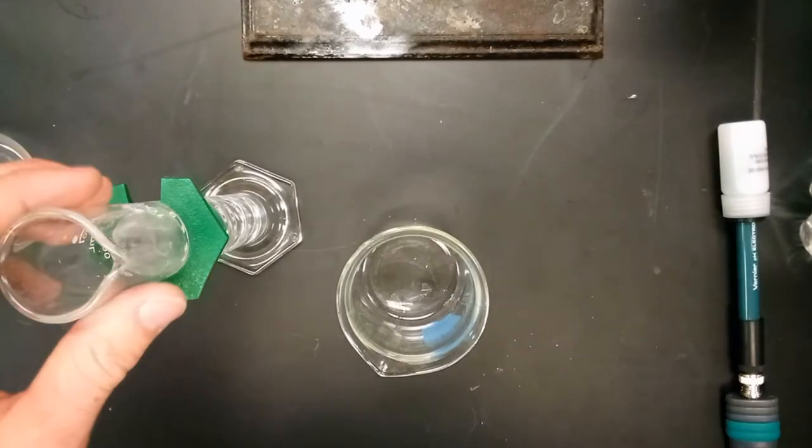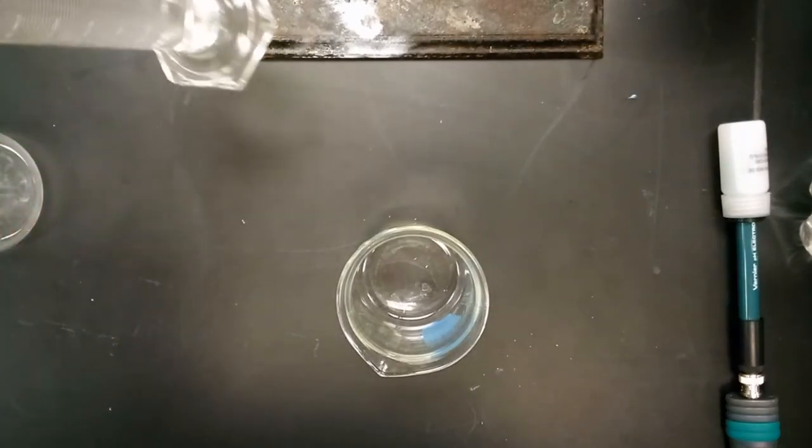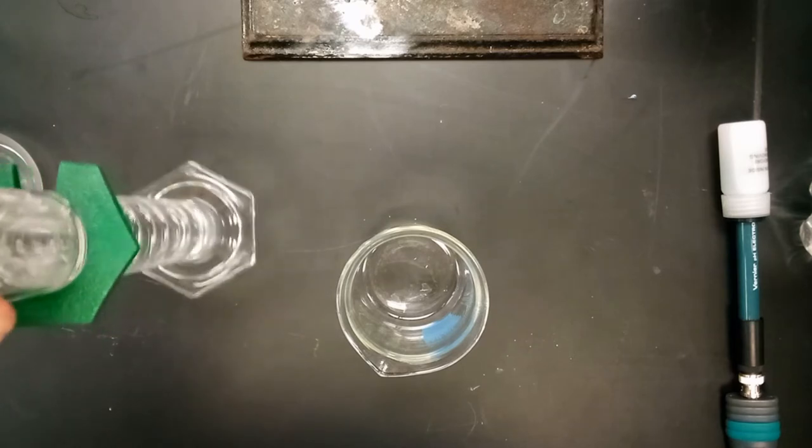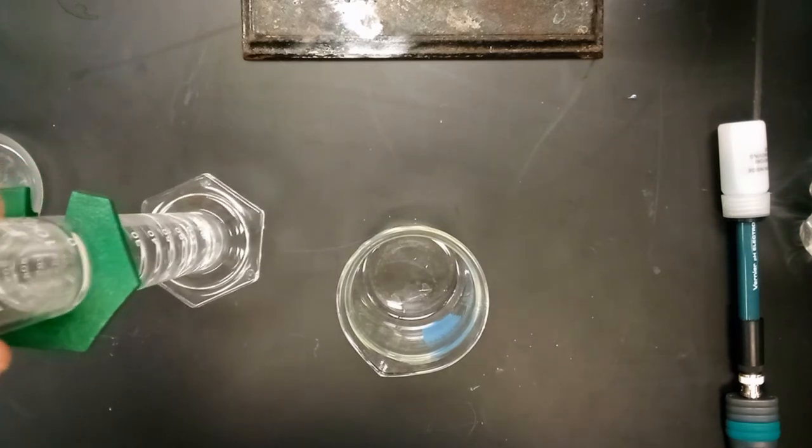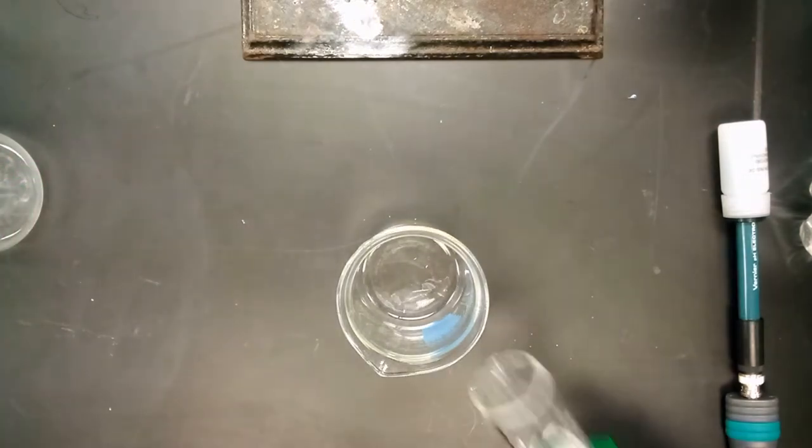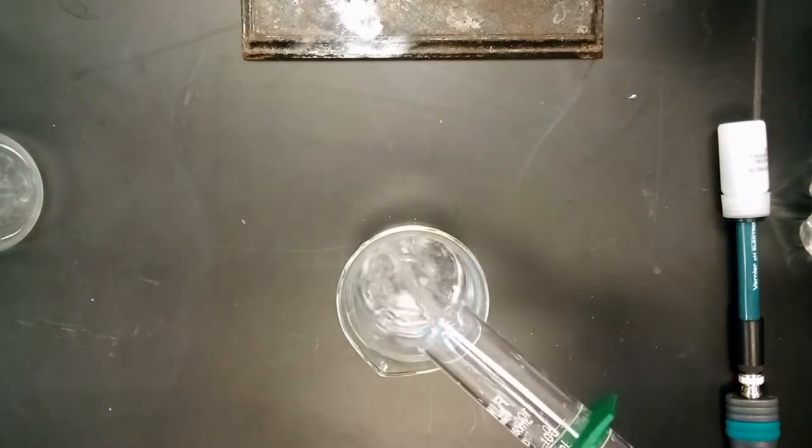We're now moving into the buffer lab. The first thing you need to do is get 100 milliliters of distilled water into the graduated cylinder. You can go ahead and add this to a beaker like so.